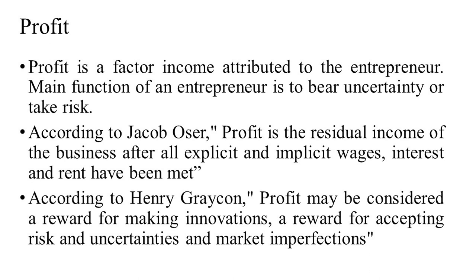The main function of an entrepreneur is to bear uncertainties or take risk. The income that an entrepreneur gets in return for these factors is called profit. According to Jacob, profit is the residual income of business after all explicit and implicit wages, interest and rent have been met. According to Henry Gakron, profit may be considered as a reward for making uncertainties, a reward for accepting risk and uncertainties, and market imperfections.